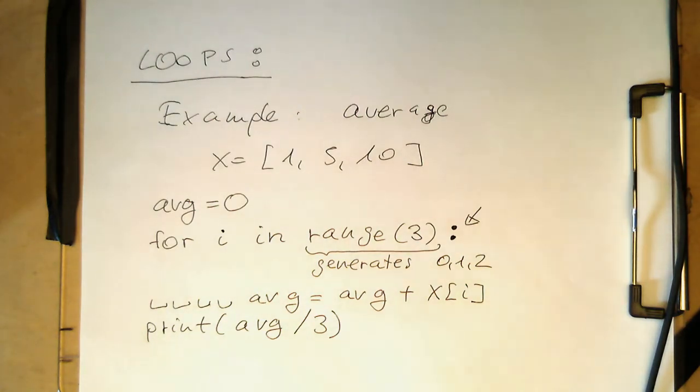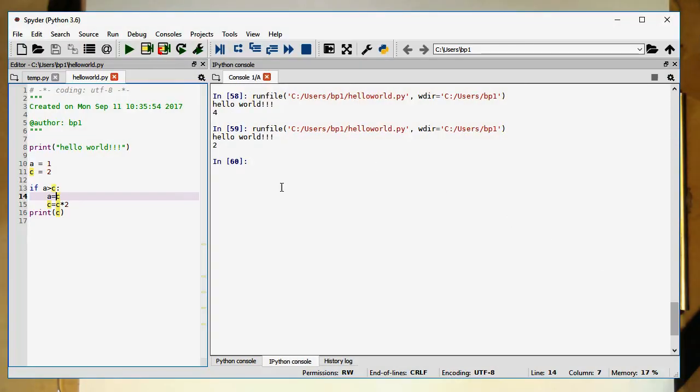So let's just try this out. So where's the anaconda environment here? There. Okay, let's just get rid of our hello world program here again. And let's just write the loop here. So x equals 1, 5, and 10. So that's our data here.